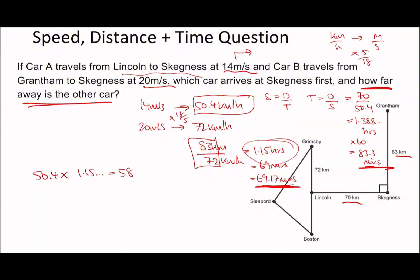That's how far it's traveled. This is Car A from Lincoln to Skegness. The answer isn't just 58.1, it's how far away is it. It's traveled 58.1, so the distance left is 70 minus 58.1, which is 11.9 kilometers.